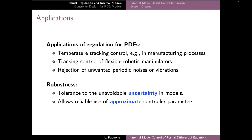Output regulation for linear PDE systems is useful in many practical applications, for example in temperature tracking control or control of fluid flows, in which case these models can be described with convection-diffusion equations. Also in the case of tracking control for flexible manipulators — robotic arms which may have flexible components — or very long crane arms. In addition, in acoustic design it might be useful to reject some unwanted periodic noises or vibrations.